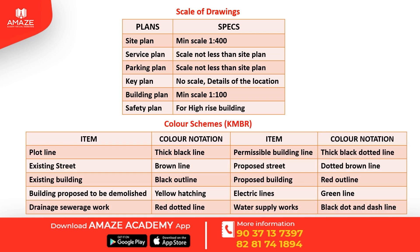The color scheme in KMBR for drawings: plot line — thick black line; permissible building line — thick black dotted line; existing street — brown line; proposed street — dotted brown line; existing building — black outline; proposed building — red outline; building to be demolished — yellow hatching; electric lines — green line; drainage or sewerage work — red dotted line; water supply works — black dot and dash line.